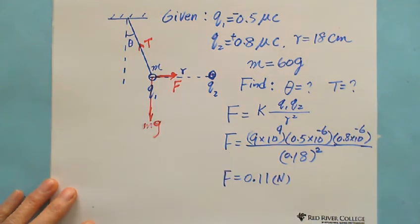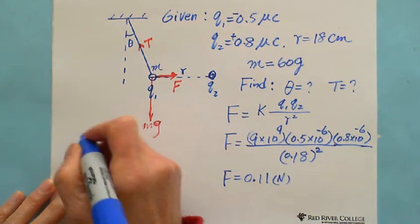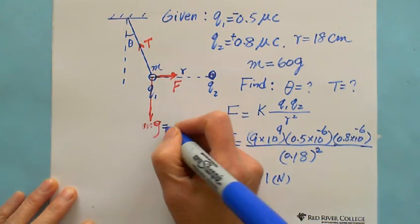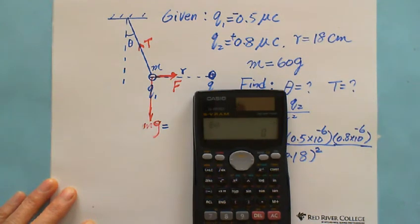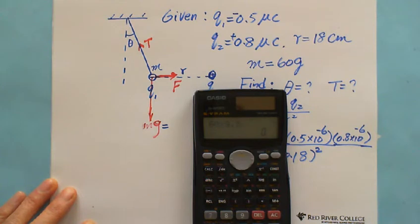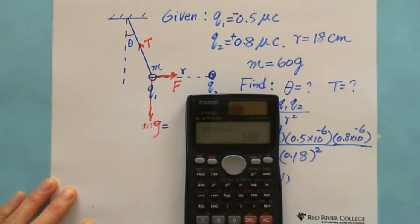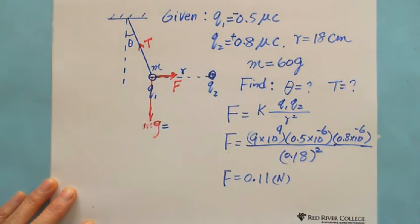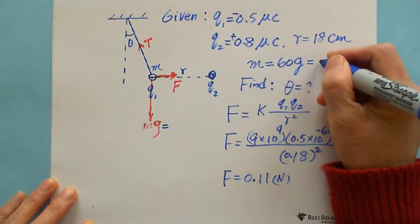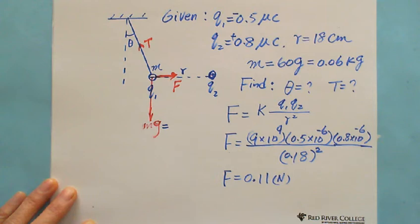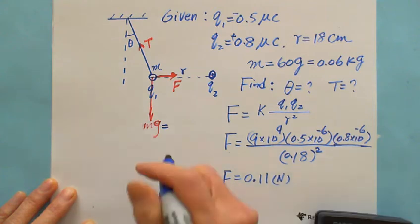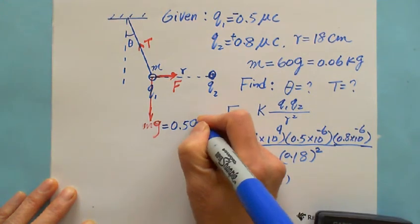And mg, we also can calculate. mg equals 60 grams multiply 9.8, but this one is grams, we need to divide by 1000 to convert to kilogram, which equals 0.06 kilogram. So then this equals 0.59 Newton.